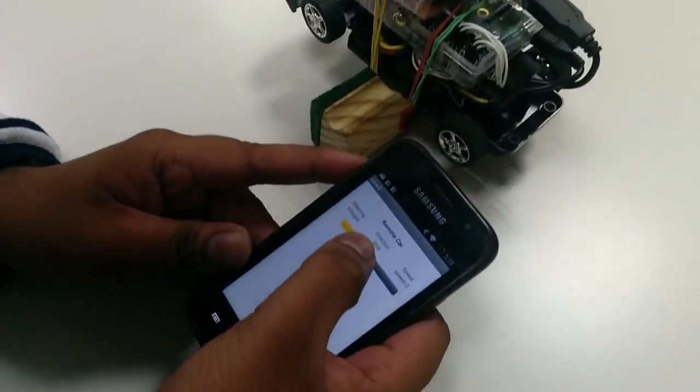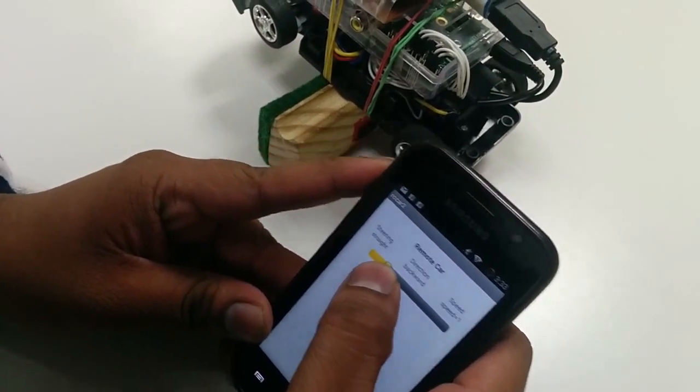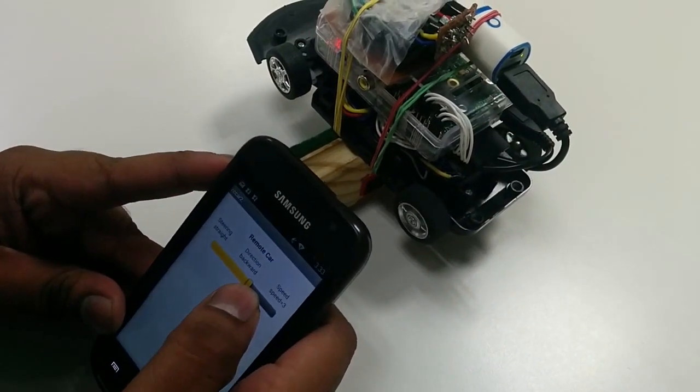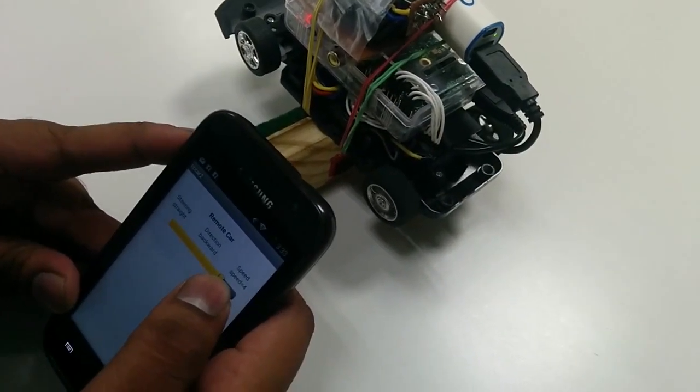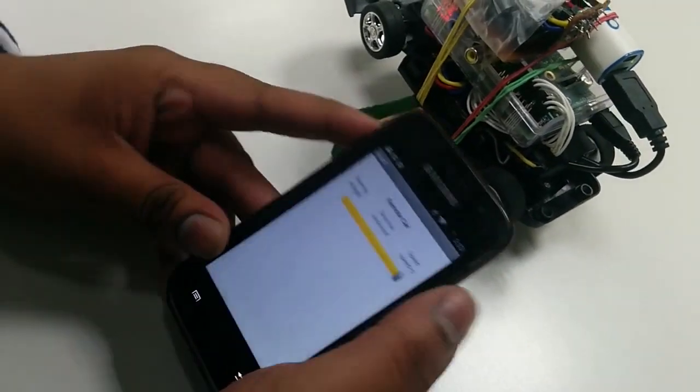I have a scroll bar which controls the speed, so 0, 1, 2, 3, 4, 5, okay.